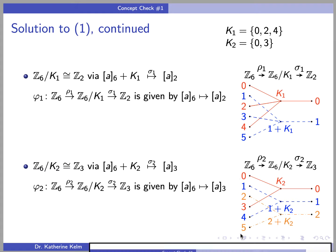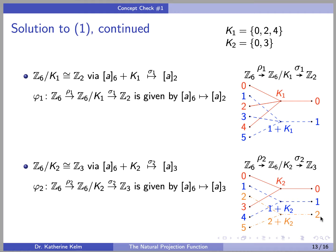Here is the diagram showing what these functions are doing. The elements of K2 — 0 and 3 — get sent to the identity element K2 in the quotient group, which gets sent to the identity element of Z3. Then 1 and 4 get sent to 1 plus K2, which gets sent to 1. And 2 and 5 get sent to 2 plus K2, which then gets sent to 2.